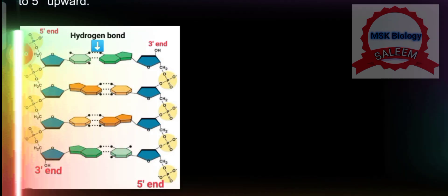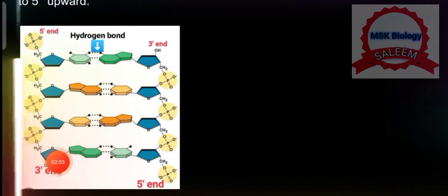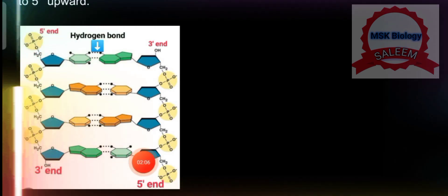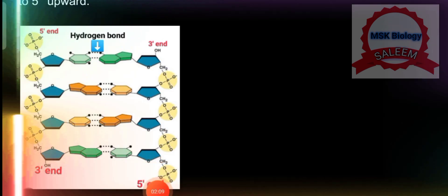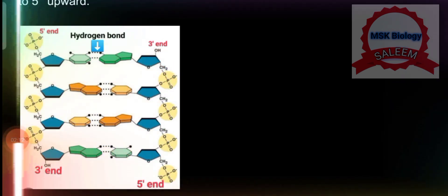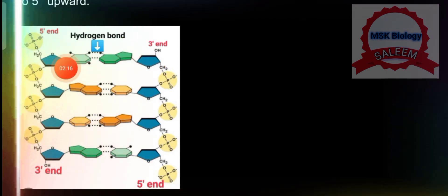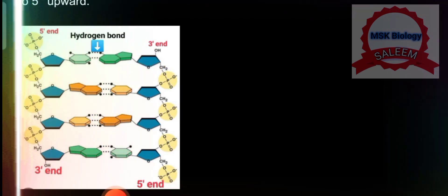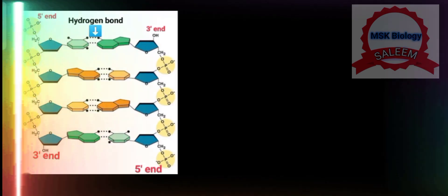Yahan pe dekh sakte hain — this is the five prime and this is the three prime. Ek strand ki running is tarah se hai five to three, aur doosari strand ki running three to five hai. Both strands are anti-parallel to each other, and in between, hydrogen bonds are present between the two nitrogenous bases.